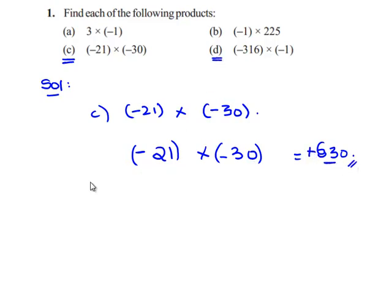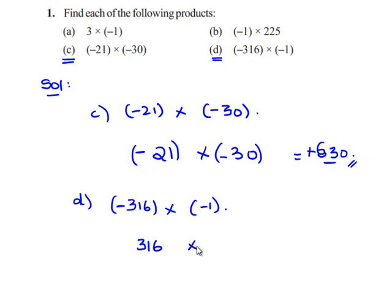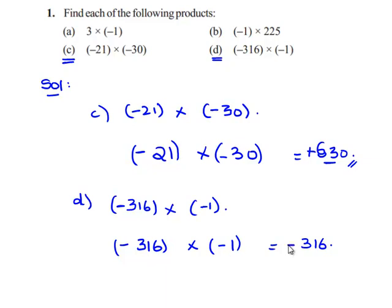We'll see the fourth part. The question is negative 316 into negative 1. Regardless of their signs, we take the product of the values, that is 316 into 1, which gives 316. The sign of 316 is negative and the sign of 1 is negative. When there are two similar signs, the product always gives a positive sign. Therefore, negative 316 into negative 1 gives positive 316.